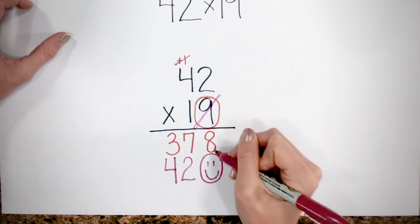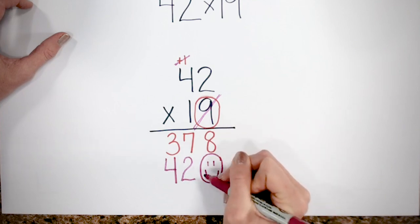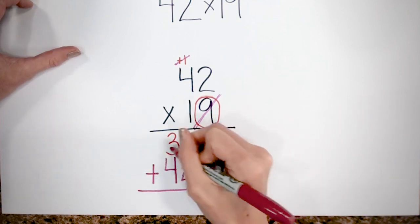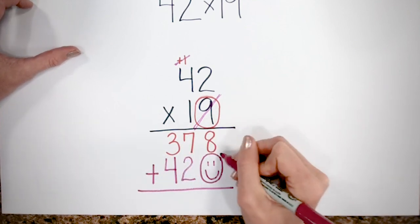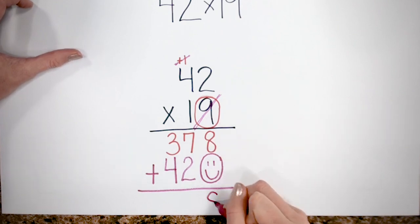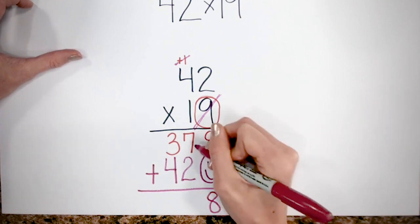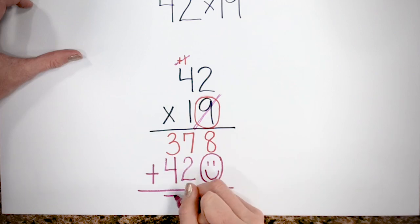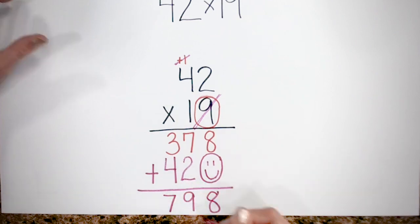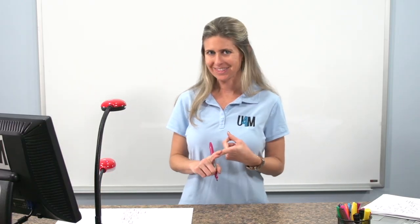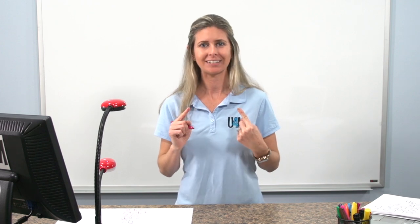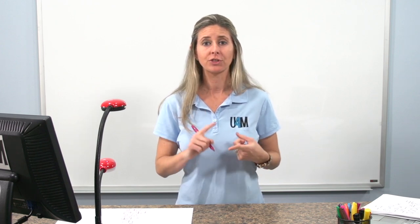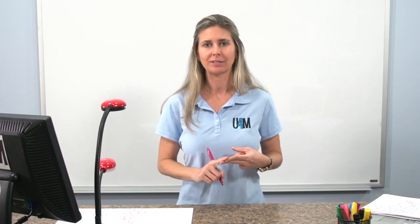Now I have my two products that I'm going to add together: 378 plus 420. Eight plus zero is eight. Seven plus two is nine. And three plus four is seven. So remember, when we're done with the ones, we put our zero placeholder smiley face in there. Now we're going to move on to a three-digit times a two-digit number.